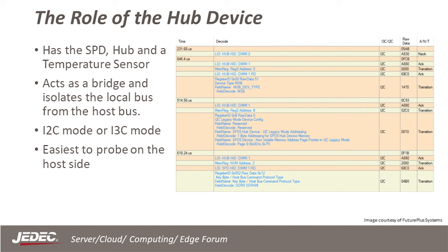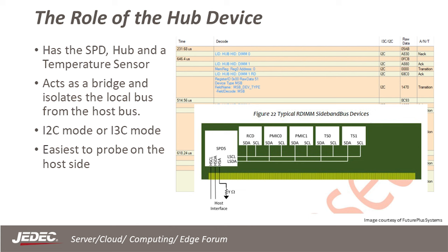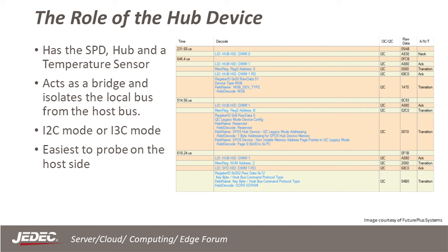Something new for DDR5 is the hub device, which contains the SPD, the hub, and a temperature sensor. It acts as a bridge from the host SCL and SDA signals to the devices that sit behind the hub — such as the RCD, the PMIC, and additional temperature sensors. The sideband bus starts in I2C and then, after seeing a CCC called SET_AASA, will phase over to I3C. As shown on the previous slide, it is easiest to probe the host side of the bus.